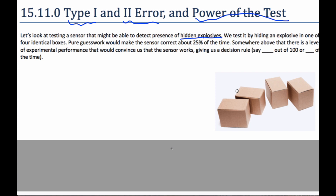We take our four identical boxes and hide an explosive inside one of them. By purely guessing, and if I randomized it each time, 25% of the time I would be able to correctly guess which one had the explosives. Because if I just randomly guess 100 times, I'm going to get 25 right.